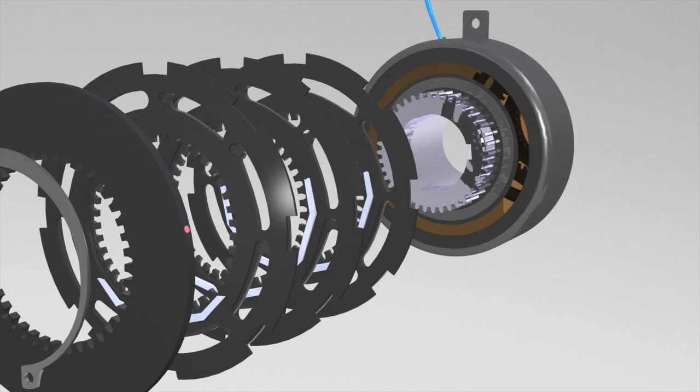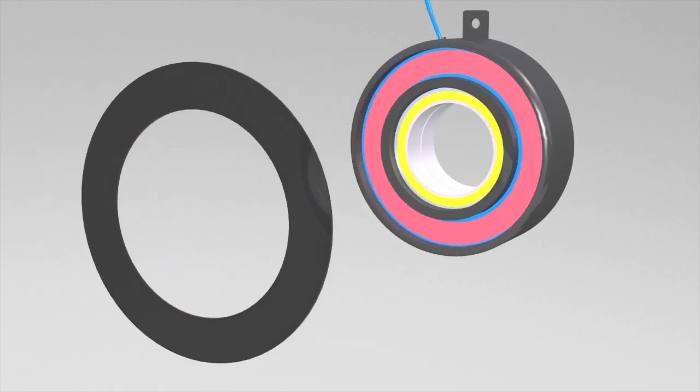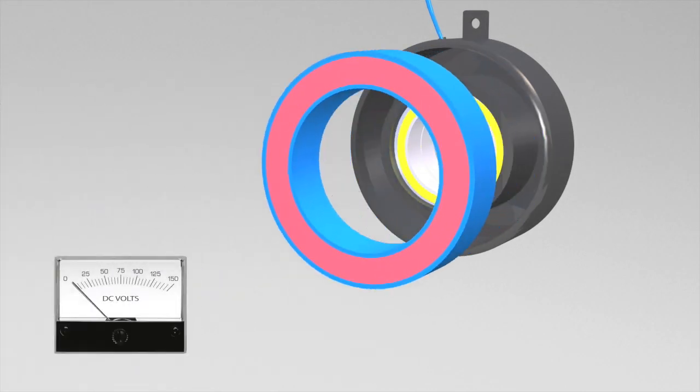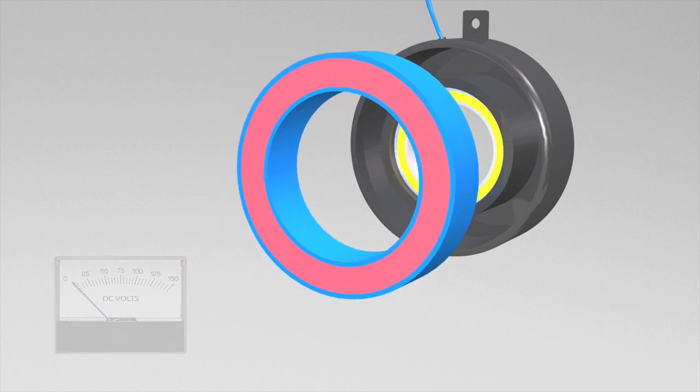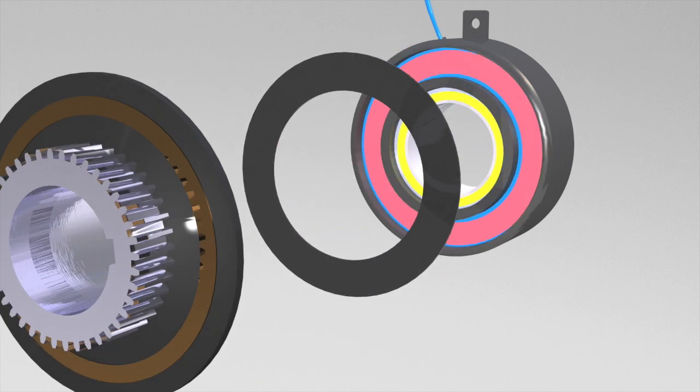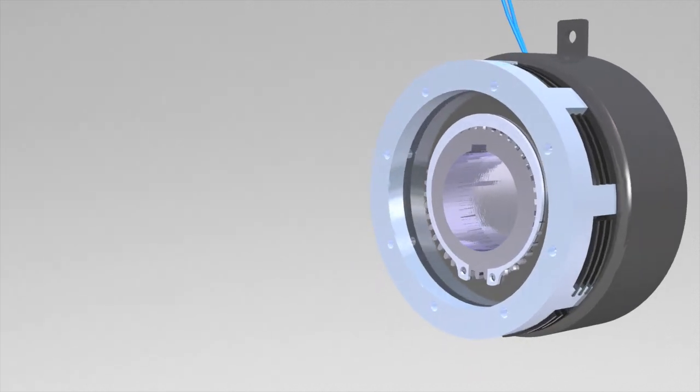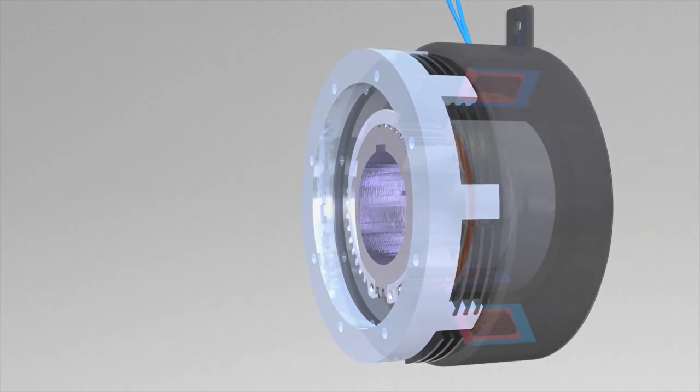Multiple disc clutches operate via electrical actuation but transmit torque mechanically. When voltage current is applied to the clutch coil, the coil becomes an electromagnet and produces lines of flux. Coil voltage is usually 24 or 90 DC but other voltages are available.